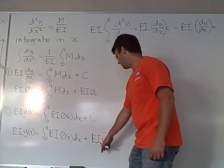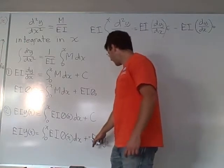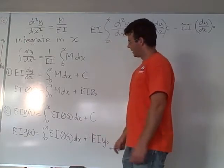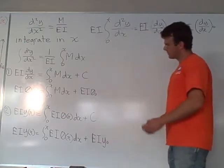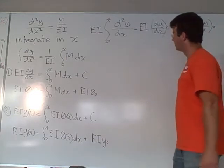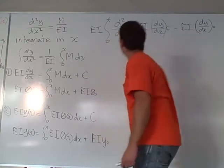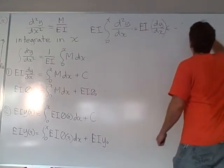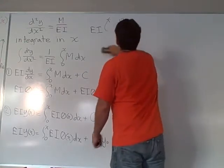You'll see that this integration constant comes out to be our initial y value times EI. I think that's fairly simple. And now I'm going to go over how to solve a simple problem.